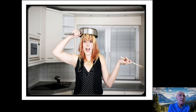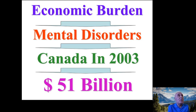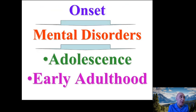There is an economic burden on healthcare budgets. For example, in Canada in 2013, approximately 51 billion dollars were spent on the management of patients with mental disorders. The onset of mental disorders typically starts in adolescence and early adulthood.